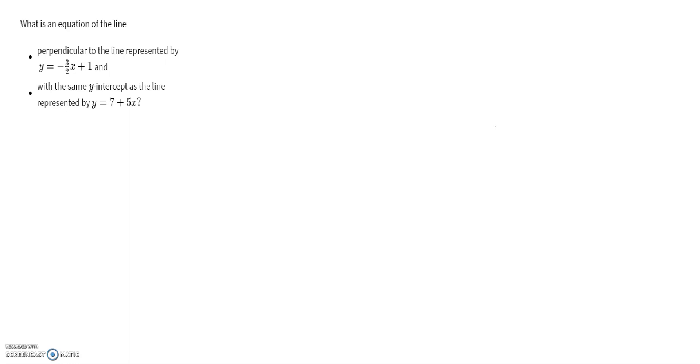The next question asks: what is the equation of the line perpendicular to the line represented by y equals negative 3 over 2x plus 1, and with the same y-intercept as the line represented by y equals 7 plus 5x? We have two conditions here. The first condition is that the new line is perpendicular, which means the slopes are negative reciprocals of each other.